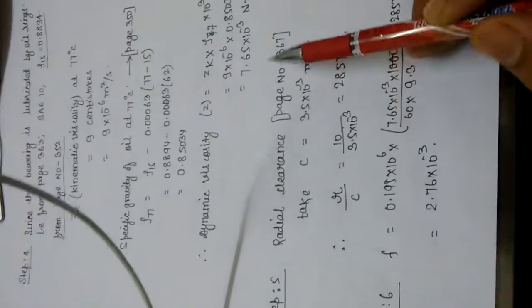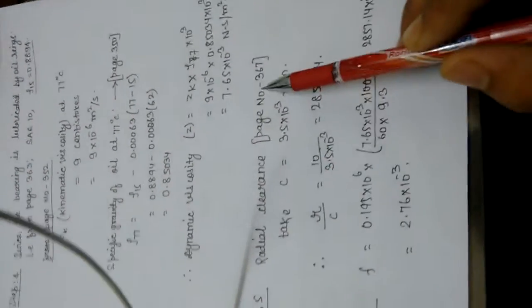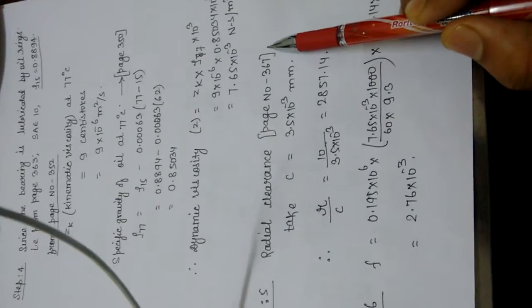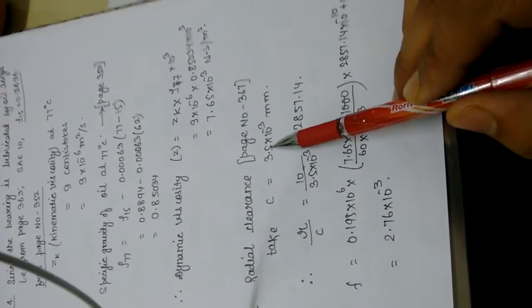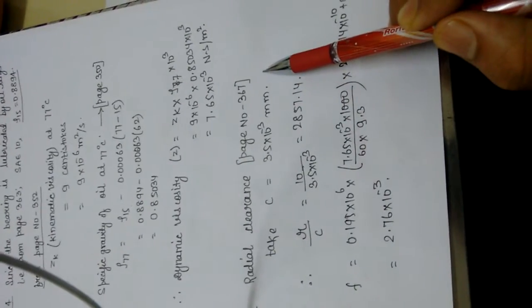Moving on to radial clearance, denoted as small c. Referring to page number 367 of the design data book, the radial clearance c = 3.5 × 10⁻³.